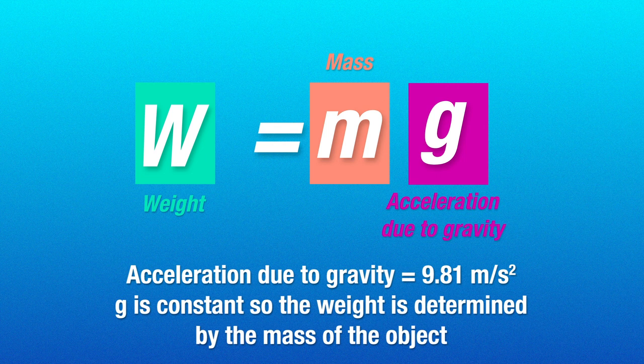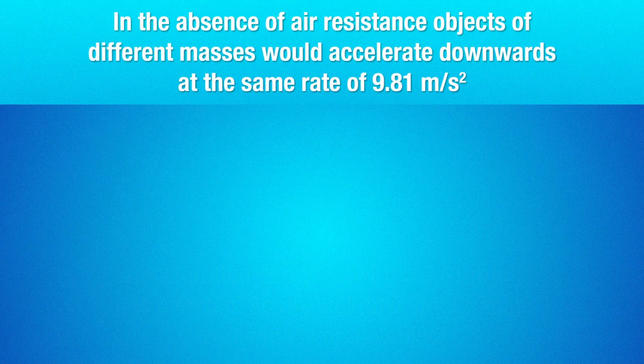Now since the acceleration produced due to gravity is usually a constant, 9.81 meters per second square, the force of gravity, that is the weight, is determined by the mass of an object. The more mass an object has, the stronger the force of gravity that's acting on it. And it's because of this force on the object that the resultant acceleration due to gravity will always be 9.81 meters per second square for an object in freefall.